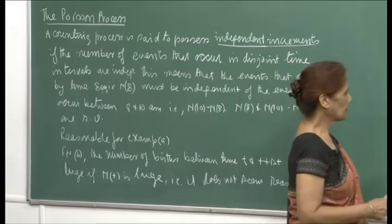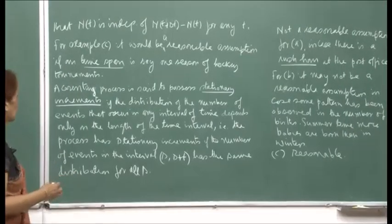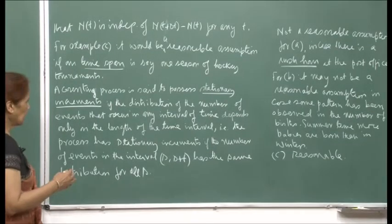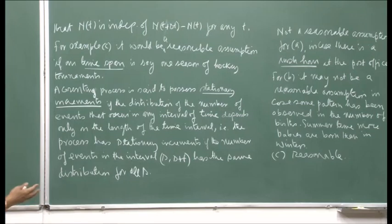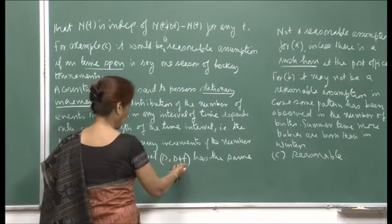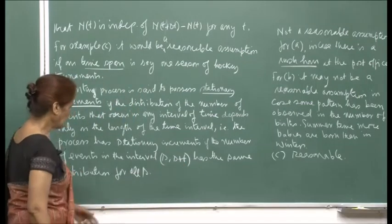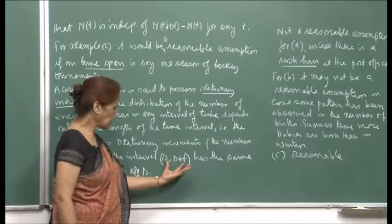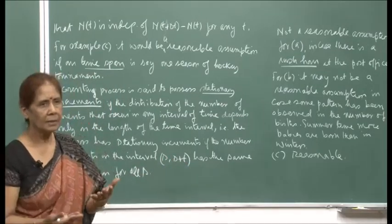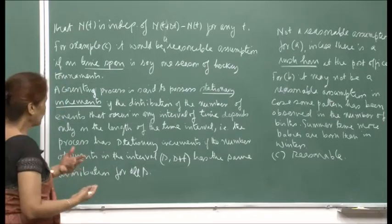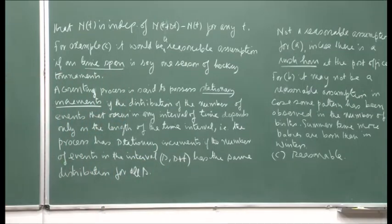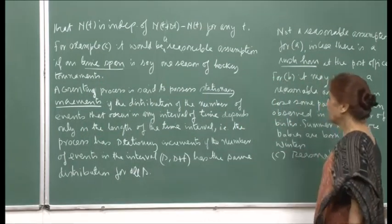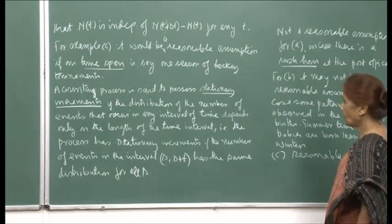The other important assumption for a counting process is stationary increments. Here what we are saying is that the number of increments that occur should depend only on the length of the interval. If you have the interval (s, s+t), the length is t. It will not matter what value s takes; as long as the interval has length t, the number of increments is just dependent on the length of the interval.